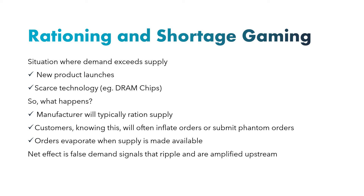We can see this with the iPhone 13 launch: there was an increase in demand, but due to the limited resources — specifically the global chip shortage — there was a decrease in the supply of the iPhone. This is a live real-world example of rationing and shortage gaming. In the next video we will discuss the other two causes of the bullwhip effect. Thank you for watching — please like the video, subscribe to the channel, and hit the bell icon for further updates.